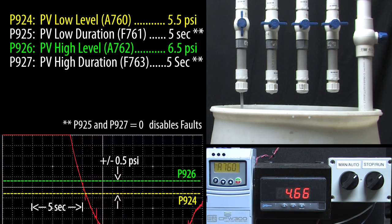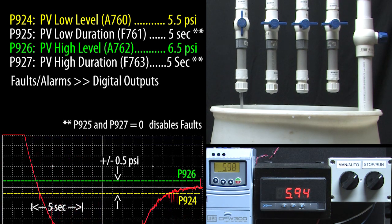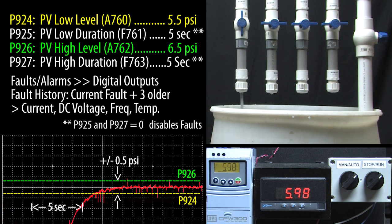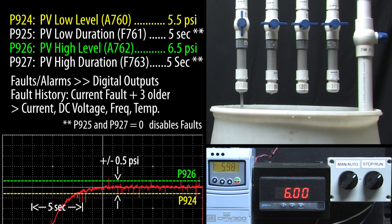That's all we need to know about PID generated alarms. Of course you can always set up digital outputs to report different kinds of alarms and faults, and you can view the current fault and the three previous faults at any time along with the current, DC link, frequency and temperature present when the last fault occurred.